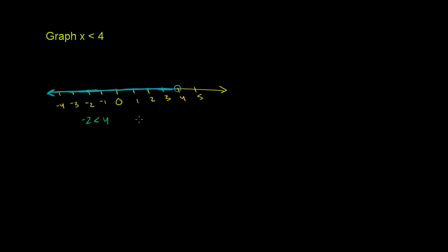If you take this value right here, this 2, it's definitely less than 4. 4 is not included because 4 is not less than 4. It's equal to 4. 5 is not included because 5 is not less than 4.